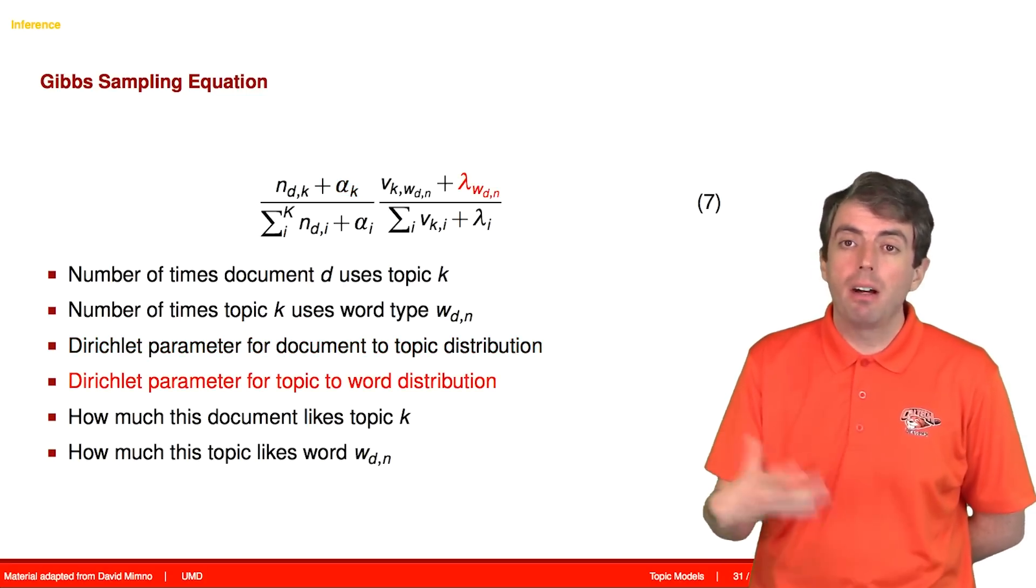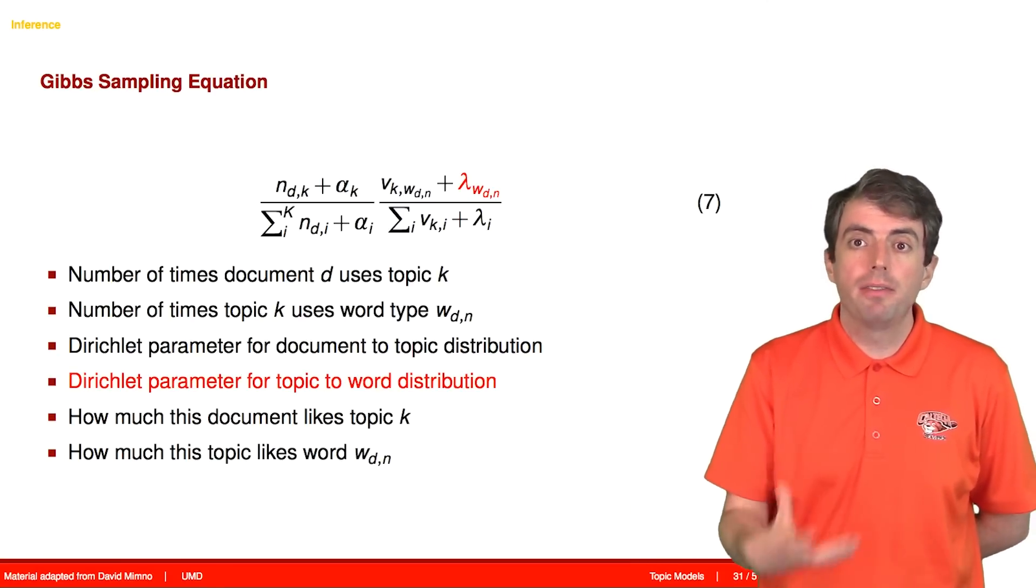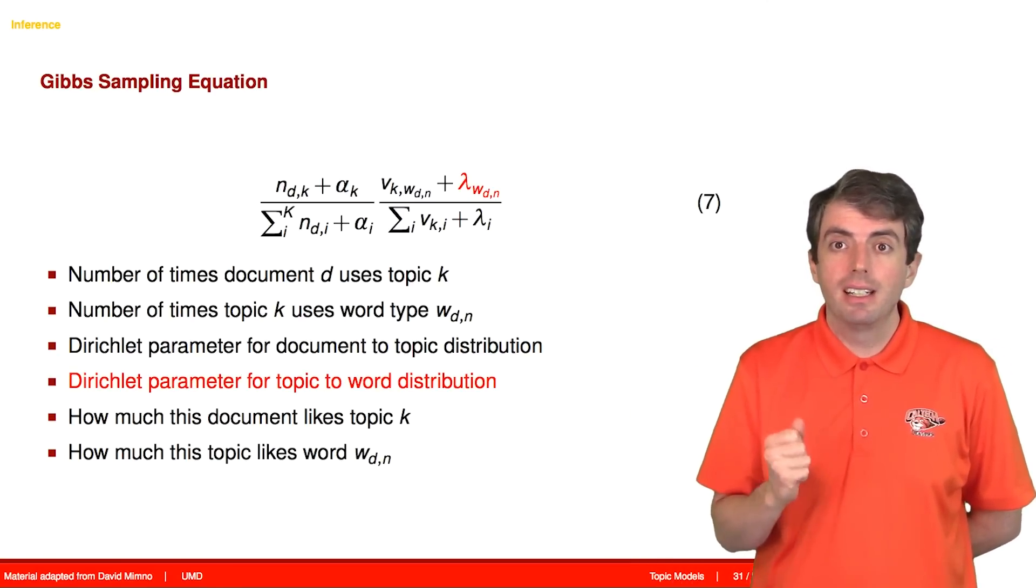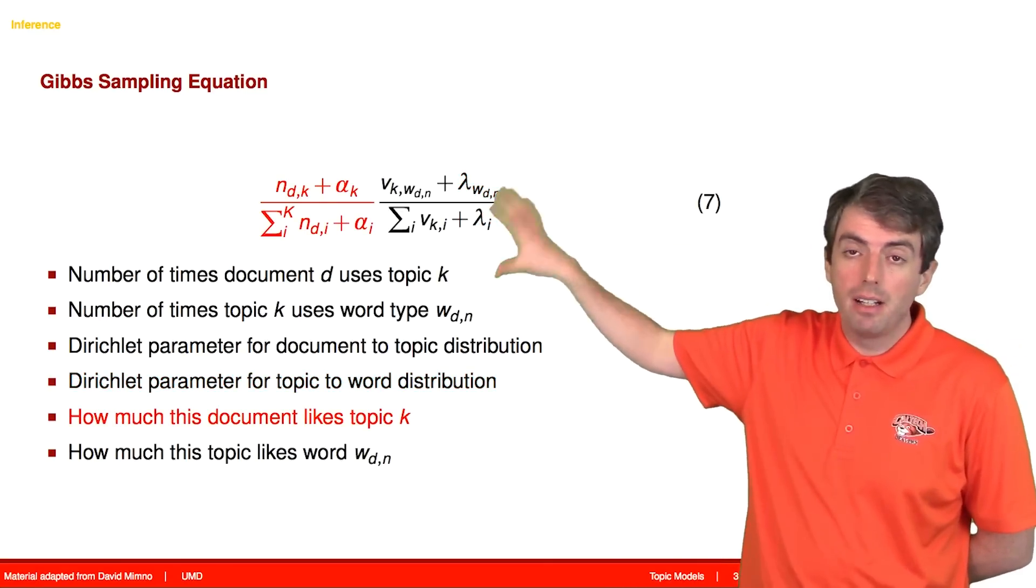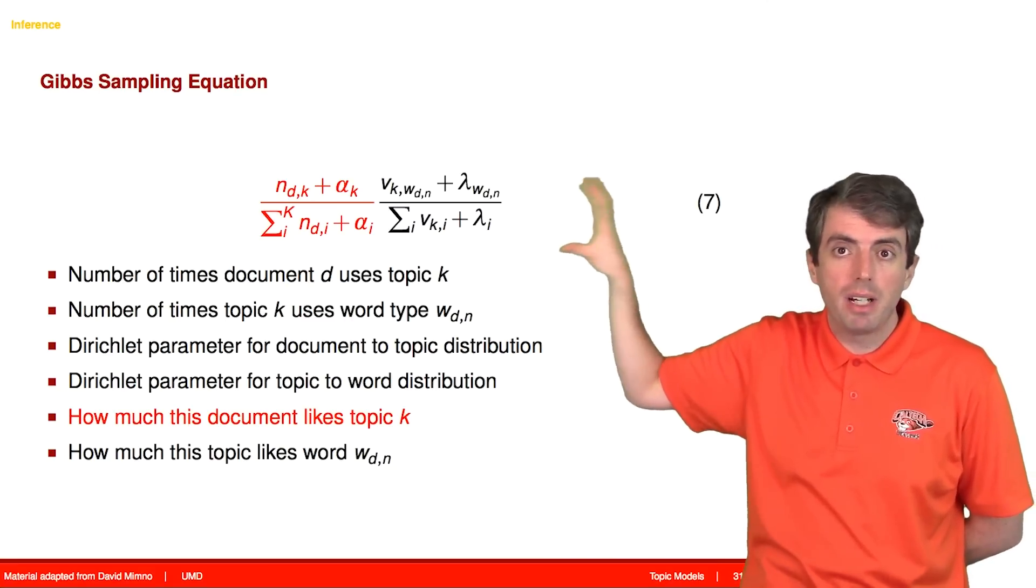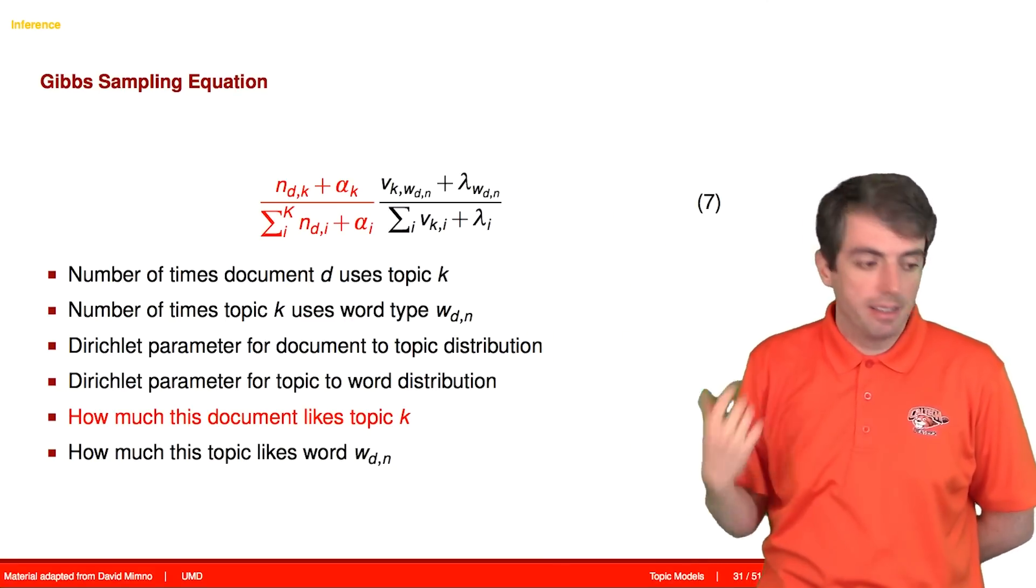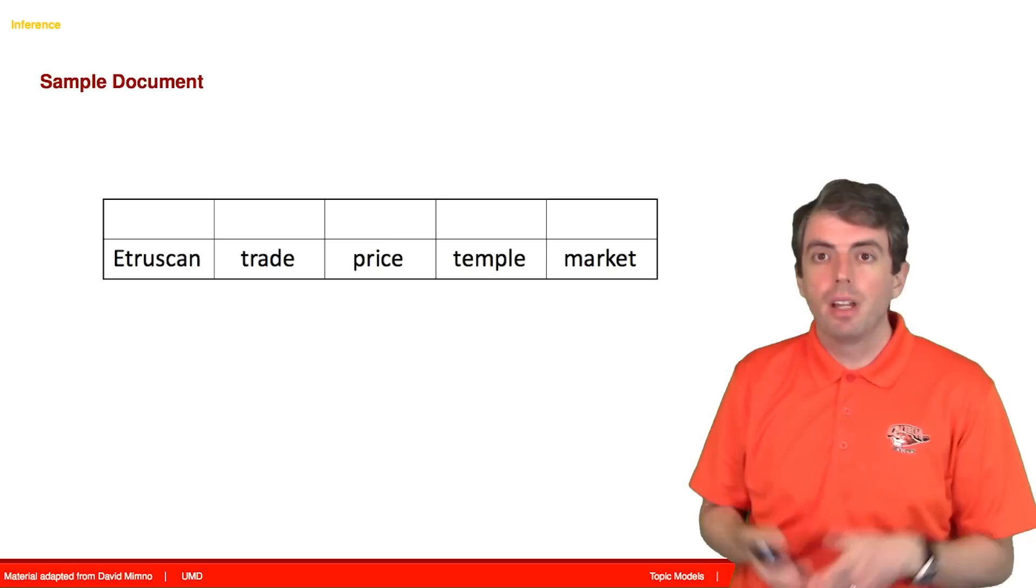And the same thing goes for how much the topic likes individual words. Even if the topic hasn't used this word before, there's some chance that it will use it going forward. And so we then add up all of the first term and normalize it. Altogether, this first term encodes how much this document likes a particular topic, and the second term encodes how much a topic likes a particular word.